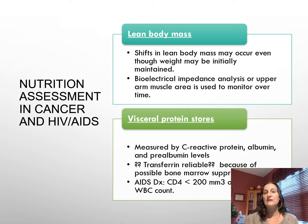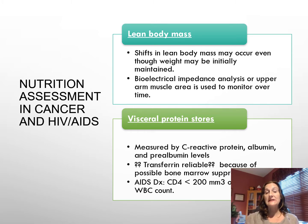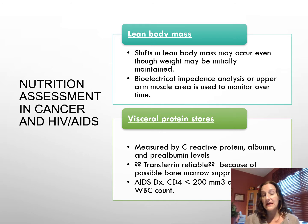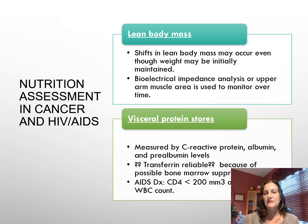We look at the bioelectrical impedance analysis machine, where a small electrical current is sent through the body or the upper arm muscle area. Because just using weight loss cannot tell the whole story in the nutritional status of these patients. Also equally important are the visceral protein stores measured by the C-reactive protein, albumin, and prealbumin. Transferrin levels are questionable in cancer patients, especially because they have bone marrow suppression, so the transferrin levels will not be accurate.